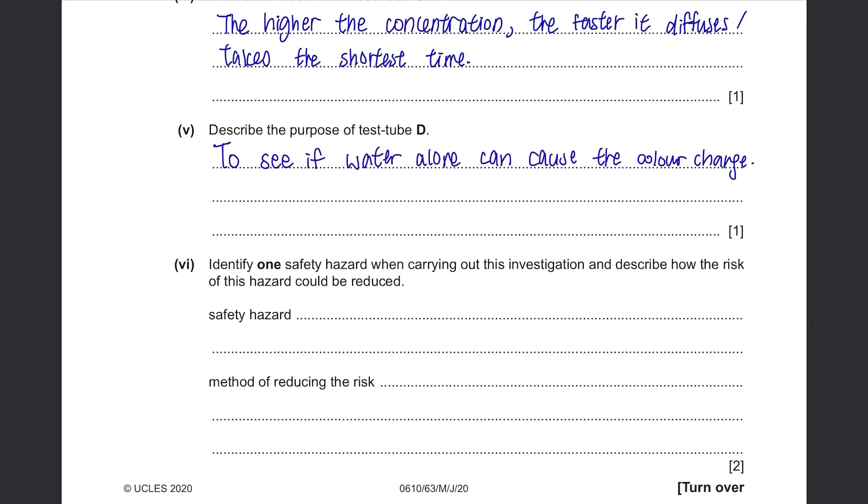Identify one safety hazard when carrying out this investigation and describe how the risk of this hazard could be reduced. There are two possible answers for this. The first one is that, you know, you're cutting the cubes. And according to the mark scheme, it's very dangerous. And of course, it's dangerous because it's sharp, you're using a knife. So the precaution is, you just cut it away from your hand or fingers. The second possible answer is that we're using an acid which is hydrochloric acid. And we have to be careful when using an acid. You have to wear gloves or an eye protection because it's corrosive.